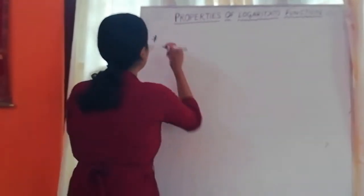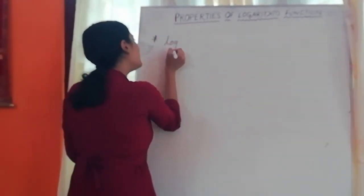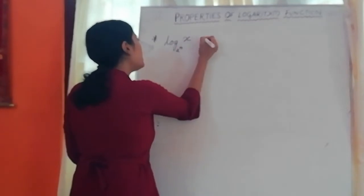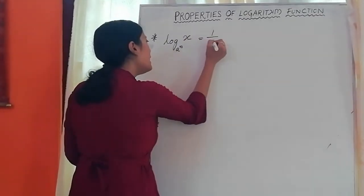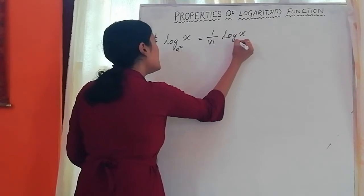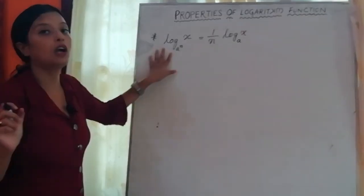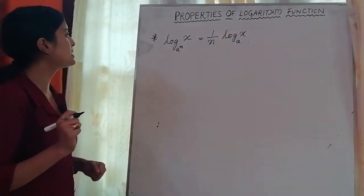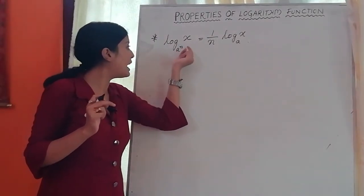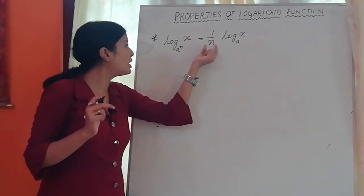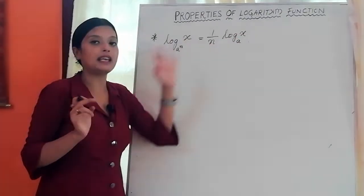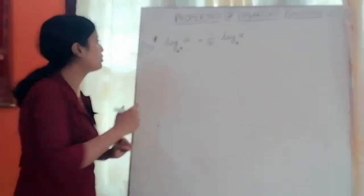Our next property is: log x base (aⁿ) is equal to (1/n) times log x base a. So from the left-hand side, log x base (aⁿ), we need to obtain 1/n into log x base a. Let's prove it.